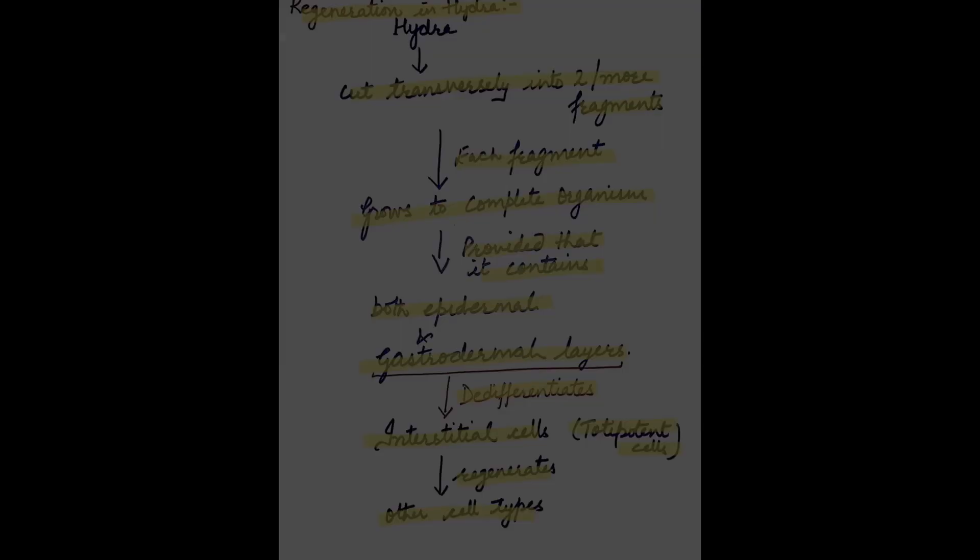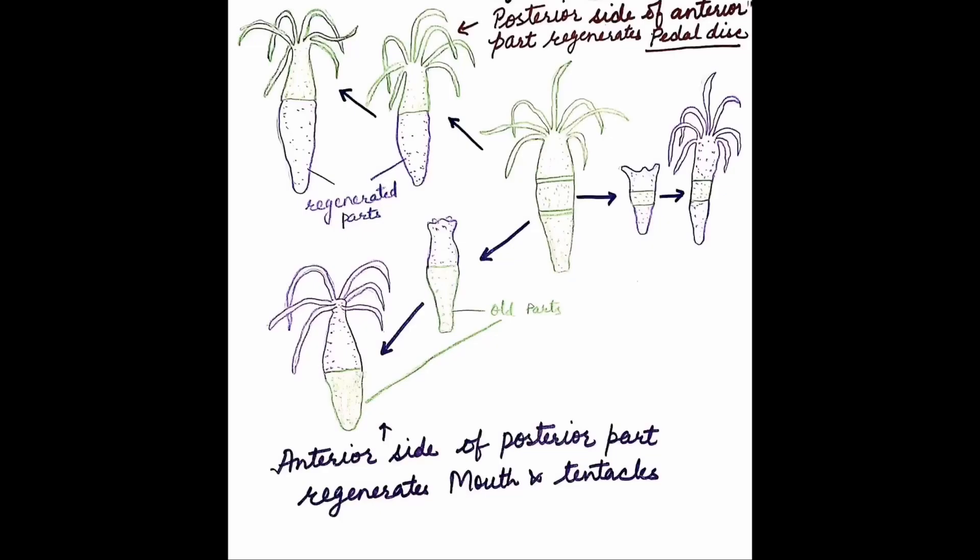The gastrodermal layer de-differentiates into interstitial cells which regenerate other cell types. These interstitial cells act as totipotent cells, meaning they have the full potential to develop into any type of cell and form a complete organism.